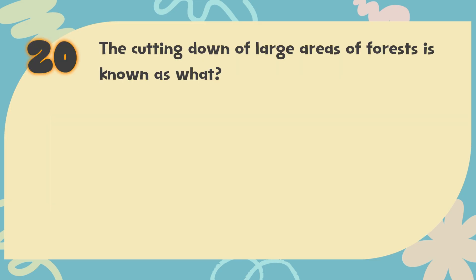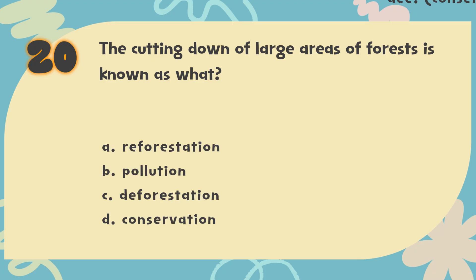Number 20. The cutting down of large areas of forests is known as what? The choices are: A. Reforestation, B. Pollution, C. Deforestation, D. Conservation.